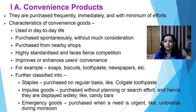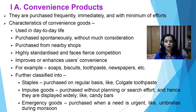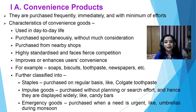Examples of convenience goods include soaps, biscuits, toothpaste, razors, shaving creams, newspapers, etc. They are further classified into staples — purchased on a regular basis like Colgate toothpaste; impulse goods — purchased without planning or search efforts and hence displayed widely, like candy bars at checkout counters or in bakery shops; and emergency goods — purchased when the need is urgent, like buying an umbrella when it is raining during monsoon.